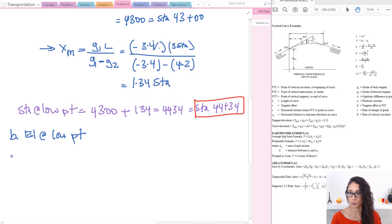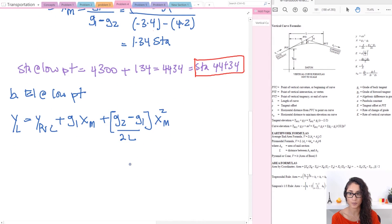So let's write it down. Y at L, which stands for lowest, equals elevation at PVC plus G1 times XM plus (G2 minus G1) divided by 2L, times XM squared. Note here guys that I didn't use X, I used XM because that's the horizontal distance we need for the lowest point. We have XM, we have L, we have all the grades. Only thing we don't have is the elevation at PVC so we need to calculate this.